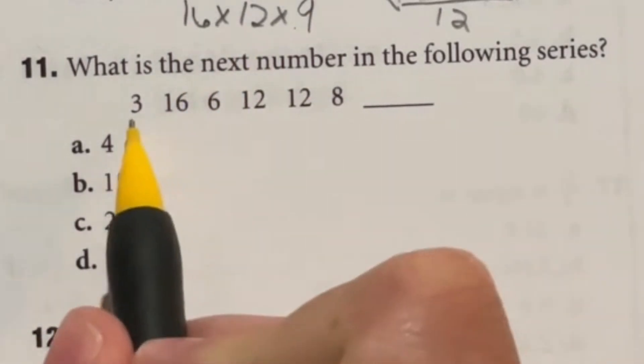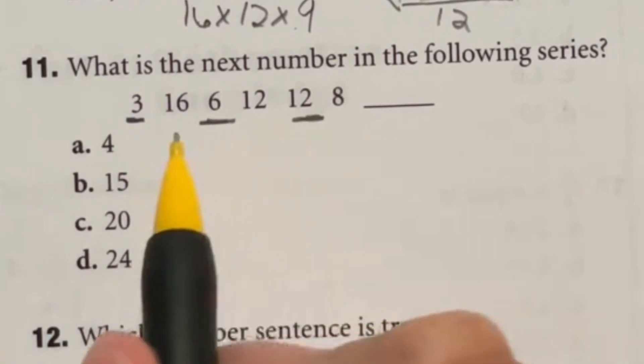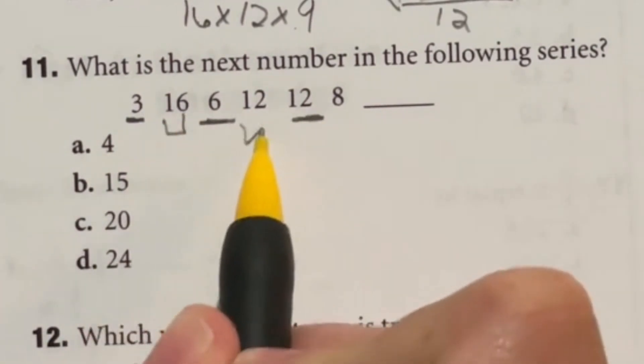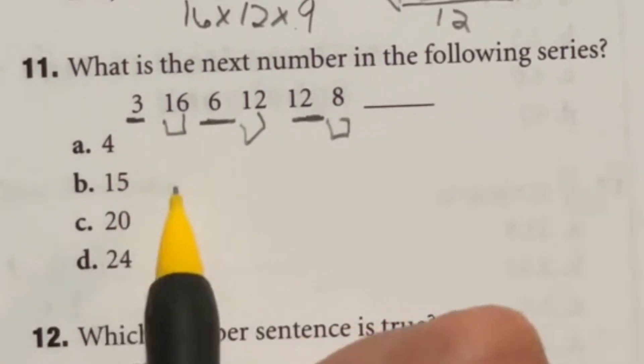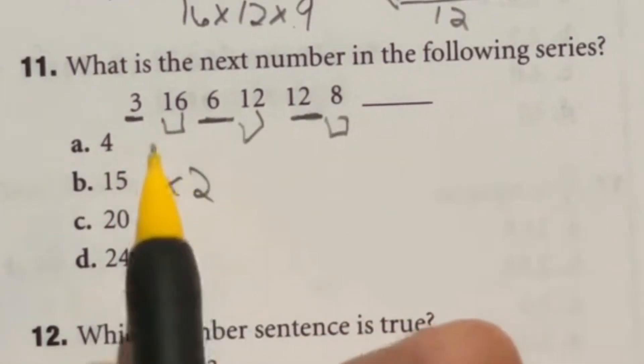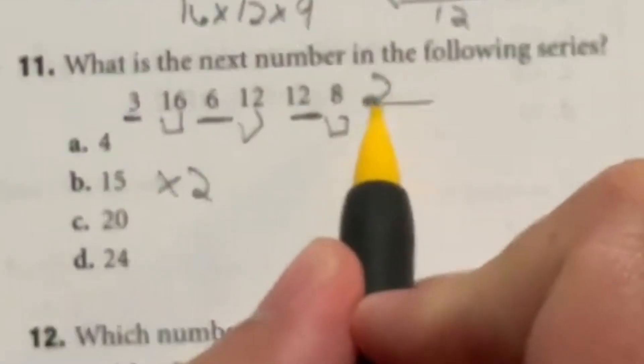It's actually an alternating series where you look at this number to this number to this number and you look at this number, this number, and this number. So if you look at all the underlined ones, you're multiplying by 2 each time. 3 times 2 is 6 times 2 is 12 times 2 is 24 which is going to be our answer.